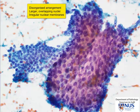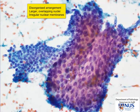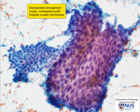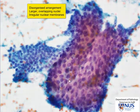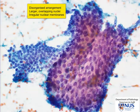Let's focus up and down. You can see that these nuclei are much larger, they are more irregular, there is more variation in nuclear size and a much greater degree of disorganization compared to this honeycomb sheet.